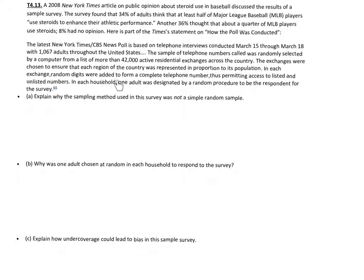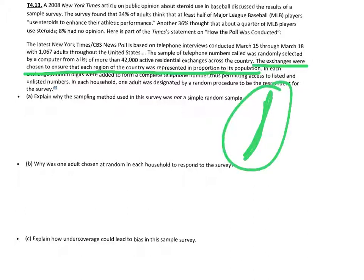In each exchange, random digits were added to form a complete telephone number, permitting access to listed and unlisted numbers. Part A: Explain why this sampling method was not a simple random sample. For a simple random sample, every possible outcome of that sample size must have an equally likely opportunity of occurring. The key reason this is not an SRS is that exchanges were chosen to ensure each region was represented proportionately — meaning a sample of all east coast respondents could never happen. Therefore, it is not a simple random sample.